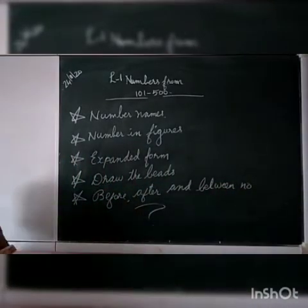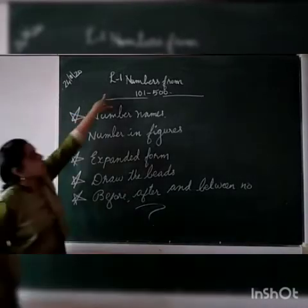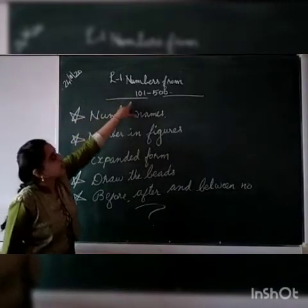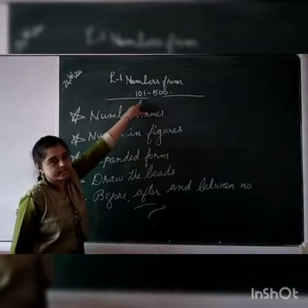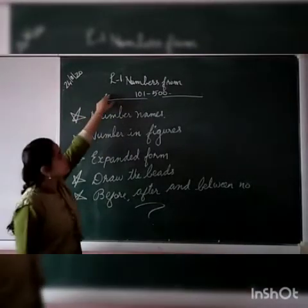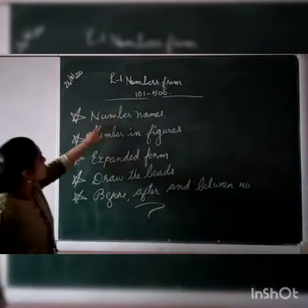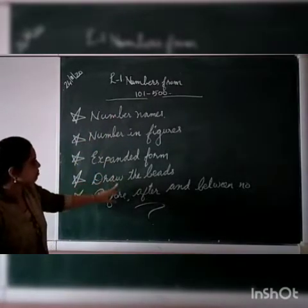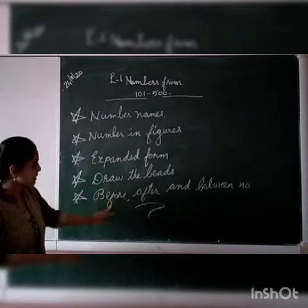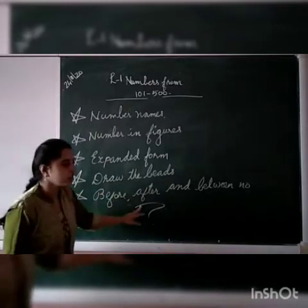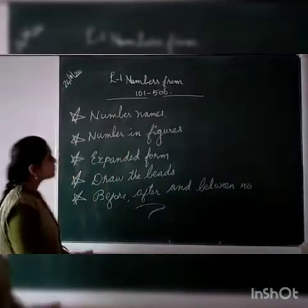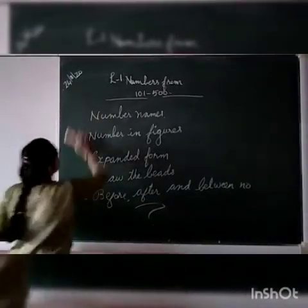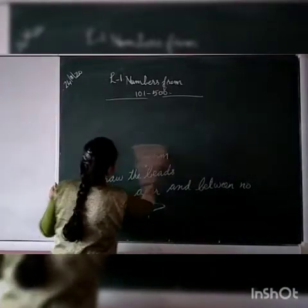Okay. Lesson number one. Numbers from 100 to 500. In this chapter we will learn number names, numbering figures, expanded form, draw the beads on abacus, before and after and between number. Ready? Okay. Then we will start numbering figures.